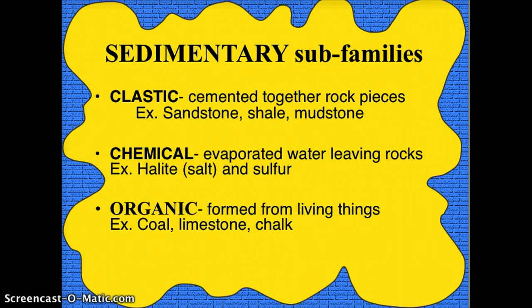There are three sub-families or groups. Clastic is probably the most common — that's when rock fragments or sediments are cemented or stuck together. Then we have chemical rocks, similar to some of our minerals, where evaporated water leaves behind rocks or minerals, usually from a precipitate of a solution. And lastly are the organic sedimentaries, which are unique because they were rocks formed from things that were once alive.